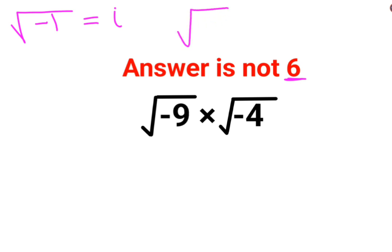So root of negative 9 can be written as root of 9 multiplied by root of minus 1. Similarly, root of minus 4 can be written as root of 4 multiplied by root of minus 1.